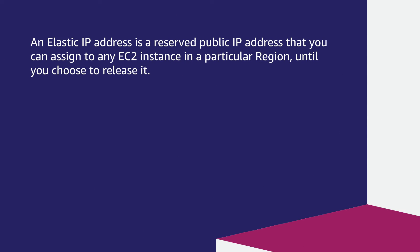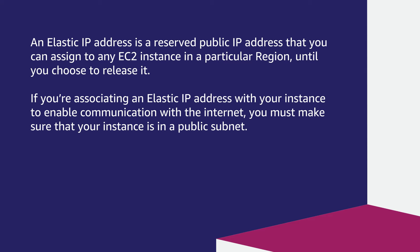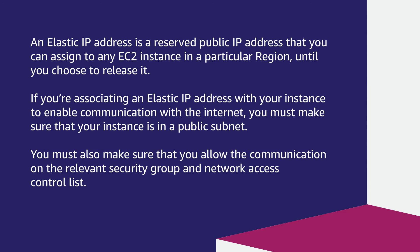An Elastic IP address is a reserved public IP address that you can assign to any EC2 instance in a particular region until you choose to release it. If you are associating an Elastic IP address with your instance to enable communication with the internet, you must make sure that your instance is in a public subnet. You must also make sure that you allow communication on the relevant security group and network access control list.